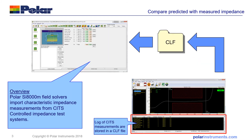The SI8000 field solver is a powerful tool for simulating impedance. It can also be used for simulating production tolerance. You can vary the width, the height, the dielectric constant, or any other parameter that will affect impedance and look at the predicted production variation.